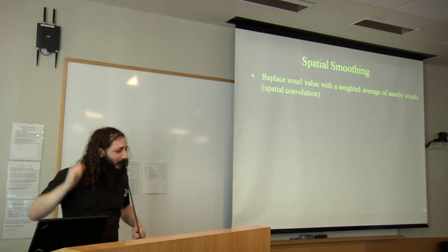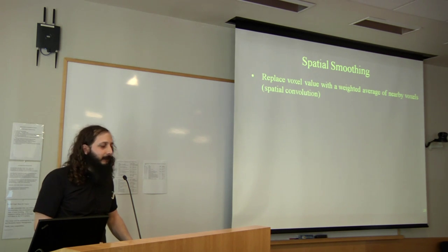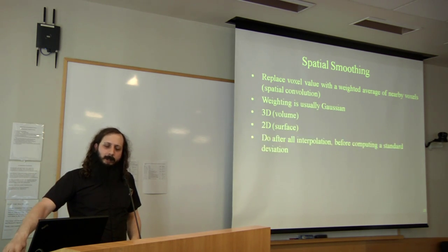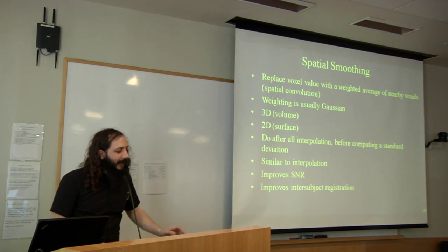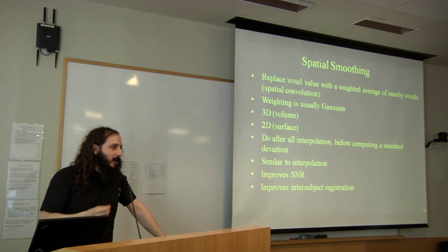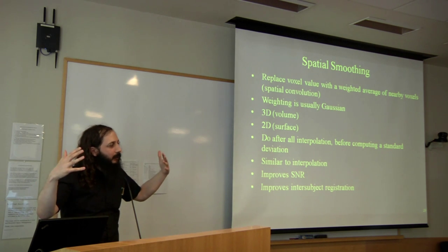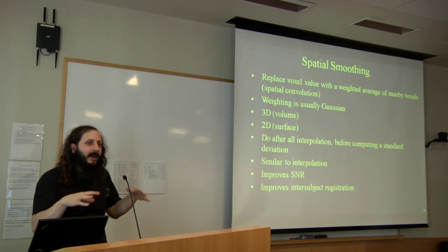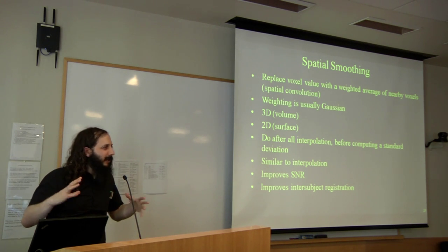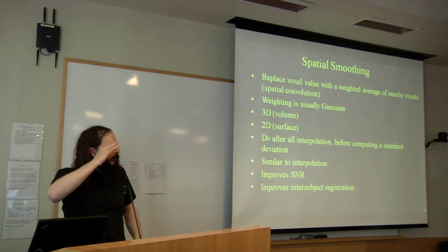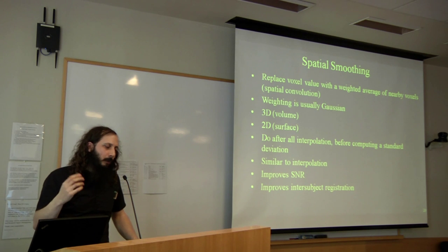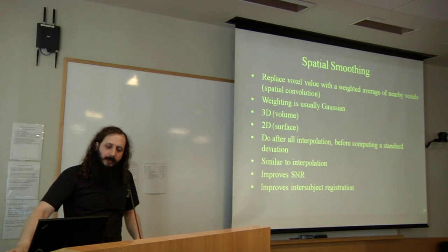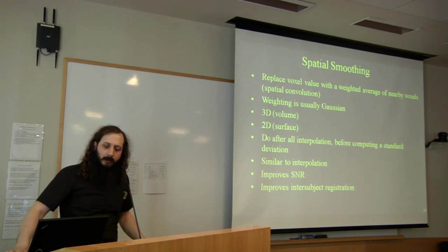Spatial smoothing replaces each voxel with the weighted average of nearby voxels — a spatial convolution with a low-pass filter. We do this because it improves SNR: the noise in the data is typically white, so by averaging voxels together you boost sensitivity. It also improves inter-subject registration by smoothing away differences across individuals. This smoothing can be done either in three dimensions in a volume-based approach, or along the cortical surface, which is advantageous because it doesn't incorporate voxels from white matter, CSF, or other tissues. Spatial smoothing is performed after all other interpolation stages but before computing standard deviations.